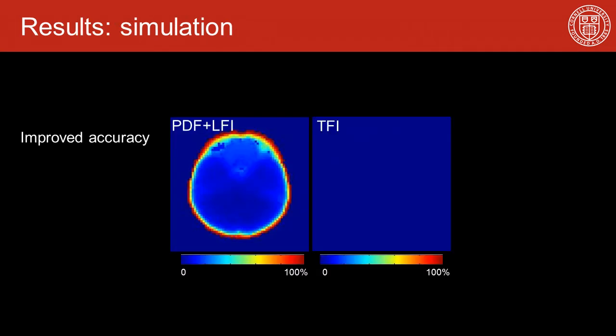Here shows the error map from the numerical simulation. At each point, it indicates how much error we get in estimating the value of a single point source placed at that location. It shows that total field inversion significantly reduces the error, especially when the source is close to the ROI boundary.